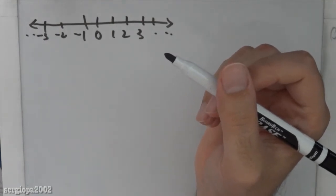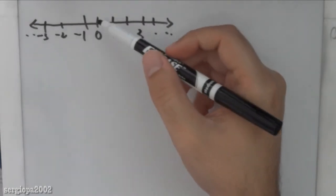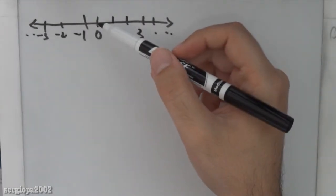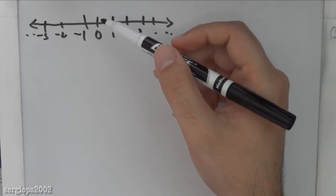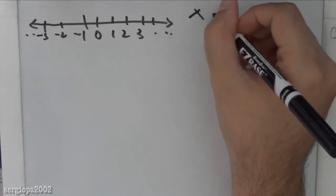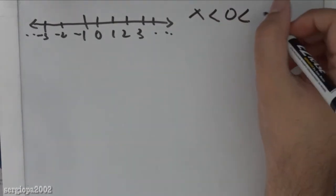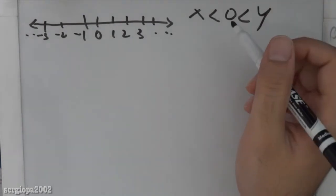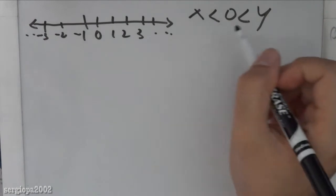Now also this relationship that these numbers have regarding the 0, which is the most important number in real numbers, can be expressed in this way. So x less than 0 less than y, for example. In other words, all the numbers that are on the left side of the 0 are negative, and on the right side are positive.